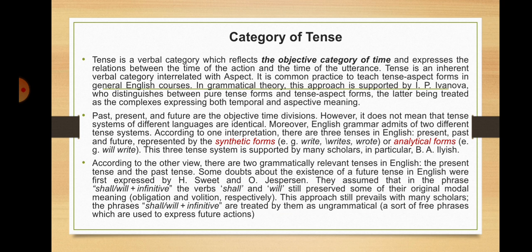Tense is a verbal category which reflects the objective category of time and expresses the relations between the time of the action and the time of the utterance. Tense is an inherent verbal category interrelated with aspect. It is common practice to teach tense-aspect forms in general English courses. In grammatical theory, this approach is supported by Ivanova, who distinguishes between pure tense forms and tense-aspect forms, the latter being treated as complexes expressing both temporal and aspectual meaning. Past, present, and future are the objective time divisions.